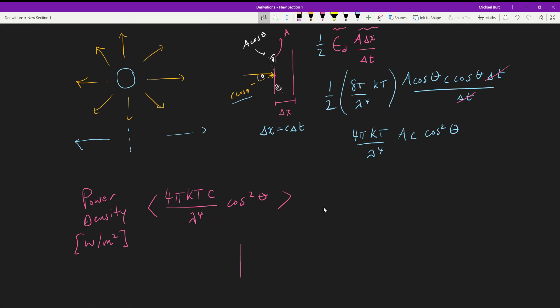What is the average of this quantity? This is the last step. The average of cosine squared - well cosine squared just looks like this, and the average is half. So what we get is 2 pi kt c over lambda to the fourth. This is the result as it's called. I think the symbol they use is B, the spectral radiance as a function of wavelength.